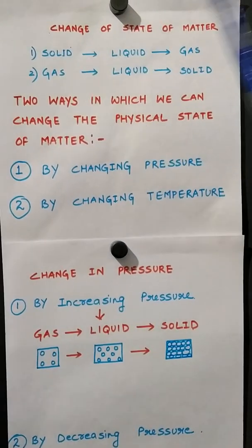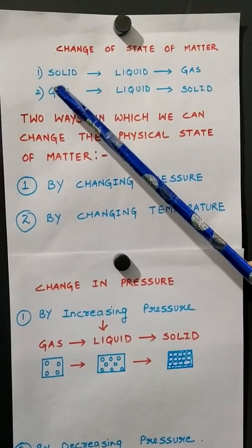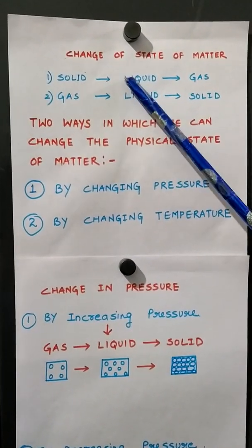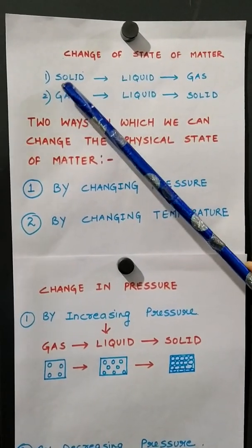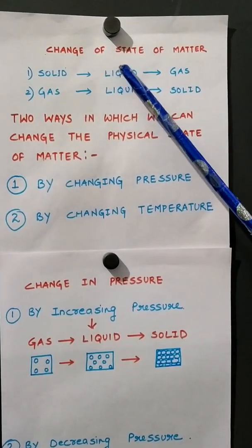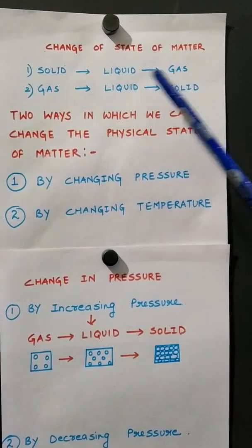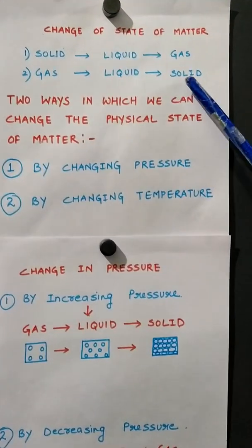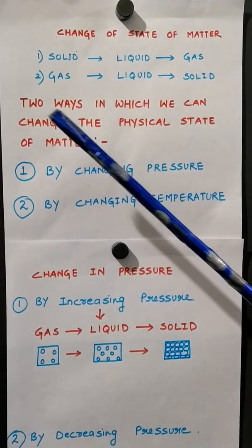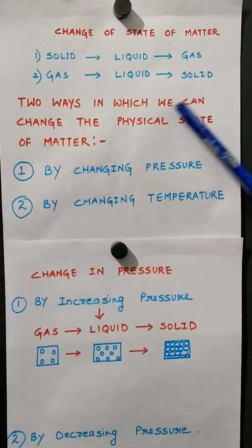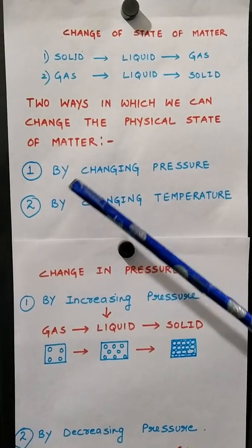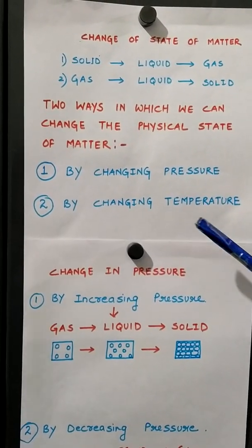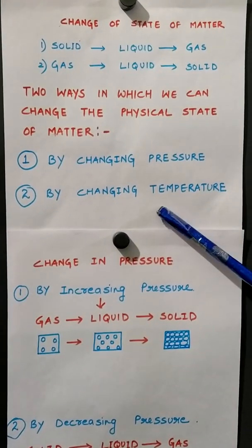Now let us study. When we talk about the states of matter, we all know that it is solid, liquid and gas. Today we will be studying the change in these states of matter — how solid is converted into liquid and liquid is converted into gas, and vice versa. We can change the physical state of matter in two ways: first by changing the pressure, and second by changing the temperature.